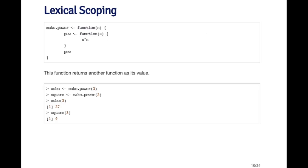I'm going to define a very simple function. These kinds of functions often come in the form of what you might think of as constructor functions — the idea is that the function is constructing another function. I want to create a function called make.power. What make.power takes as input is a number n. Inside the make.power function, I define another function called pow. pow takes an argument x, and what it does is take x and raise it to the power n. make.power returns the function pow as its return value.